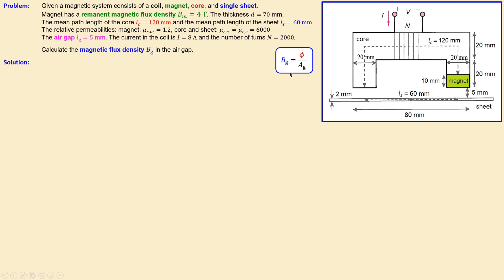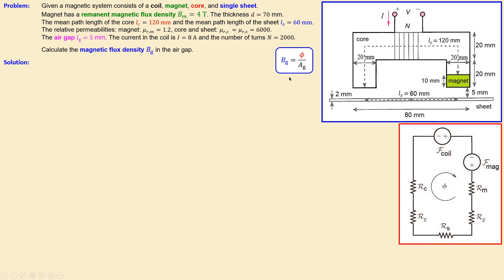Before moving on, let's build the equivalent electric circuit for this magnetic system. We have two sources: the coil and the magnet, each producing an MMF — the MMF of the coil and the MMF of the magnet. In addition, the magnet has its own reluctance R_M, and the gap, sheet, and core each have their own reluctances. So we have five reluctances and two sources.